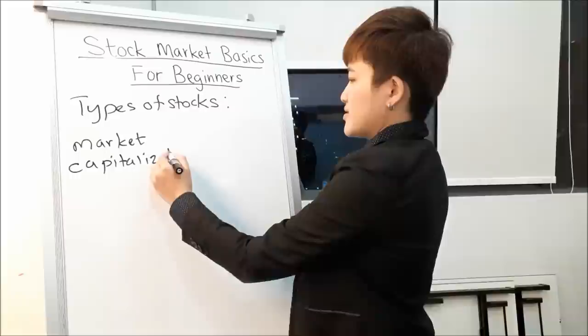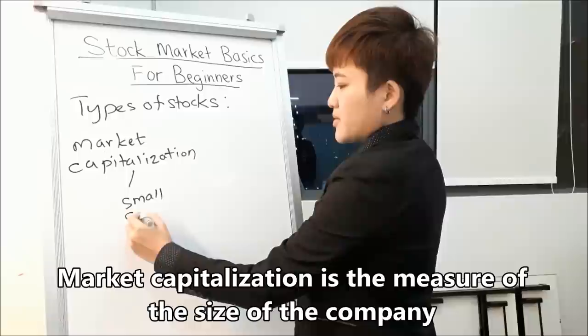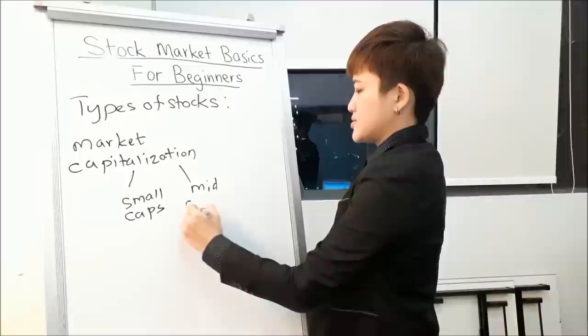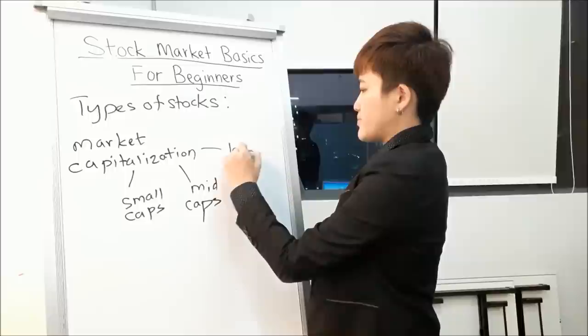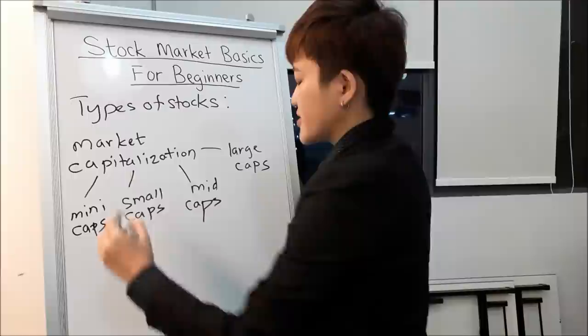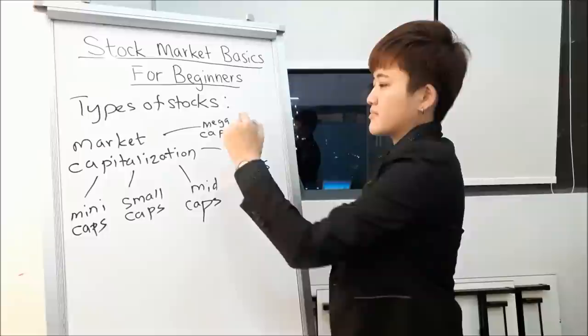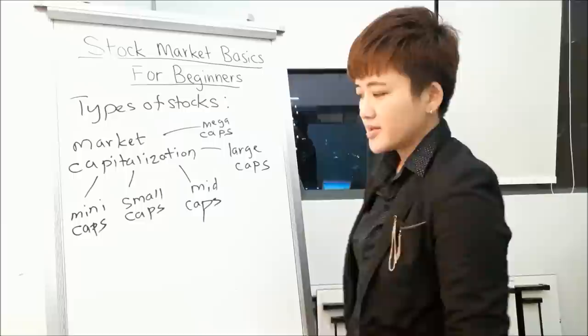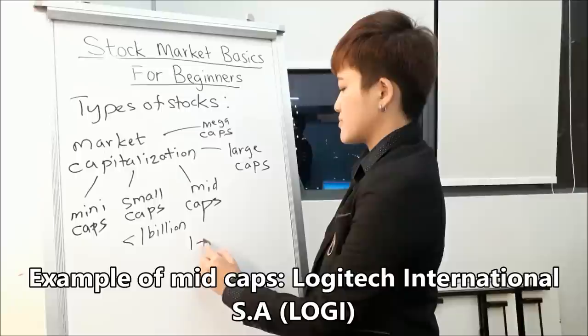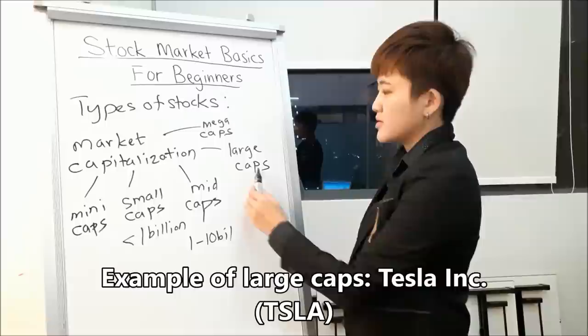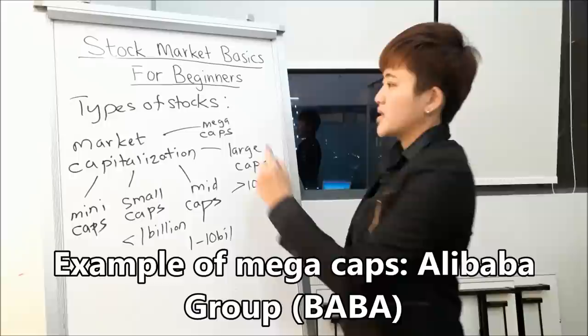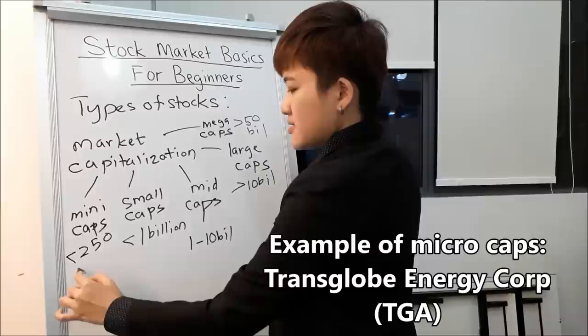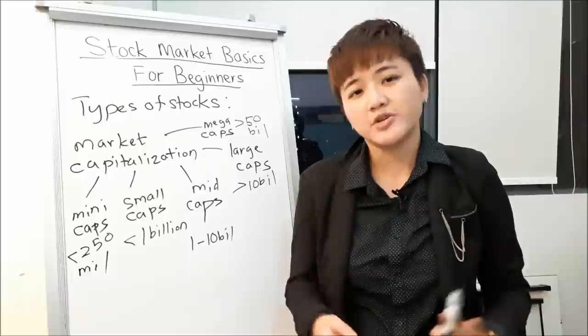The most common market cap categories are small caps, mid caps, and large caps. If you want to classify further, there are also mini caps (or micro caps) and at the very top, mega caps — the Googles and Apples of the world. Small caps typically have a market cap of less than one billion dollars; mid caps range from one to ten billion; large caps are more than ten billion; mega caps more than 50 billion; and mini caps less than 250 million dollars. You can check a company's market cap on Yahoo Finance.